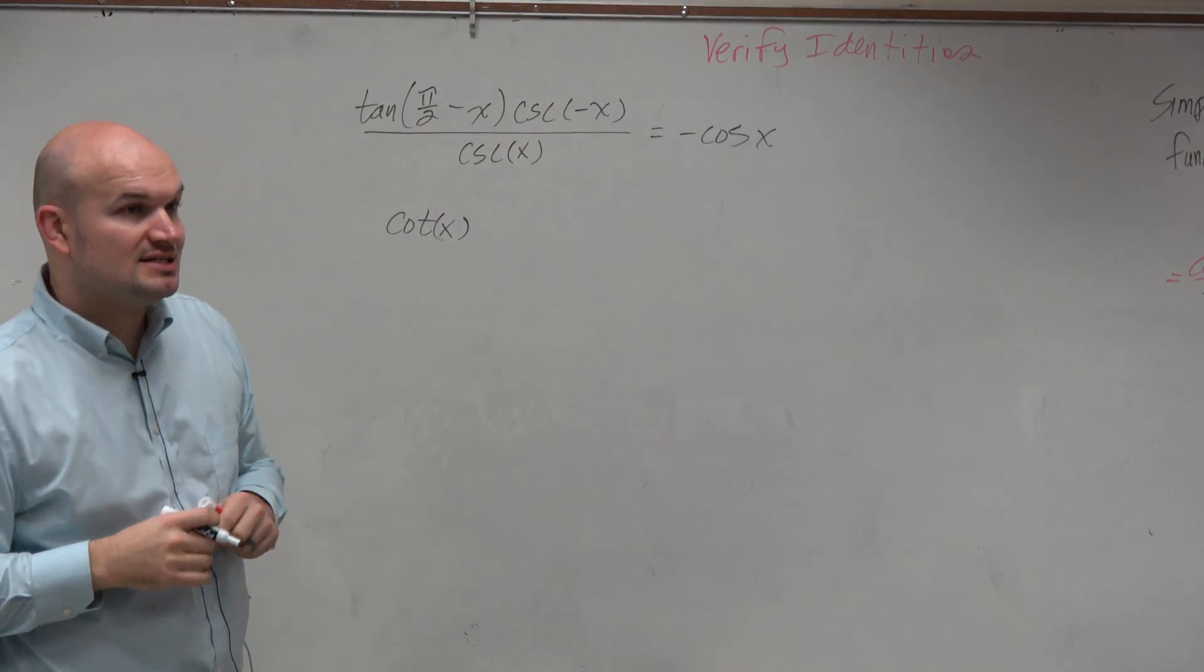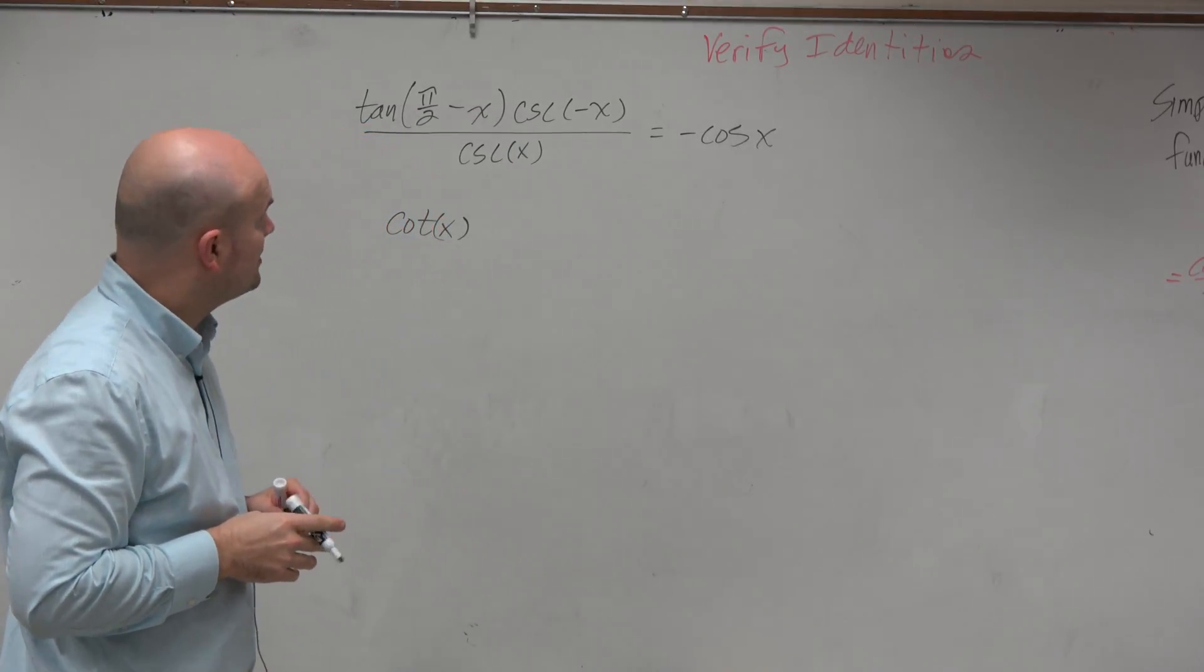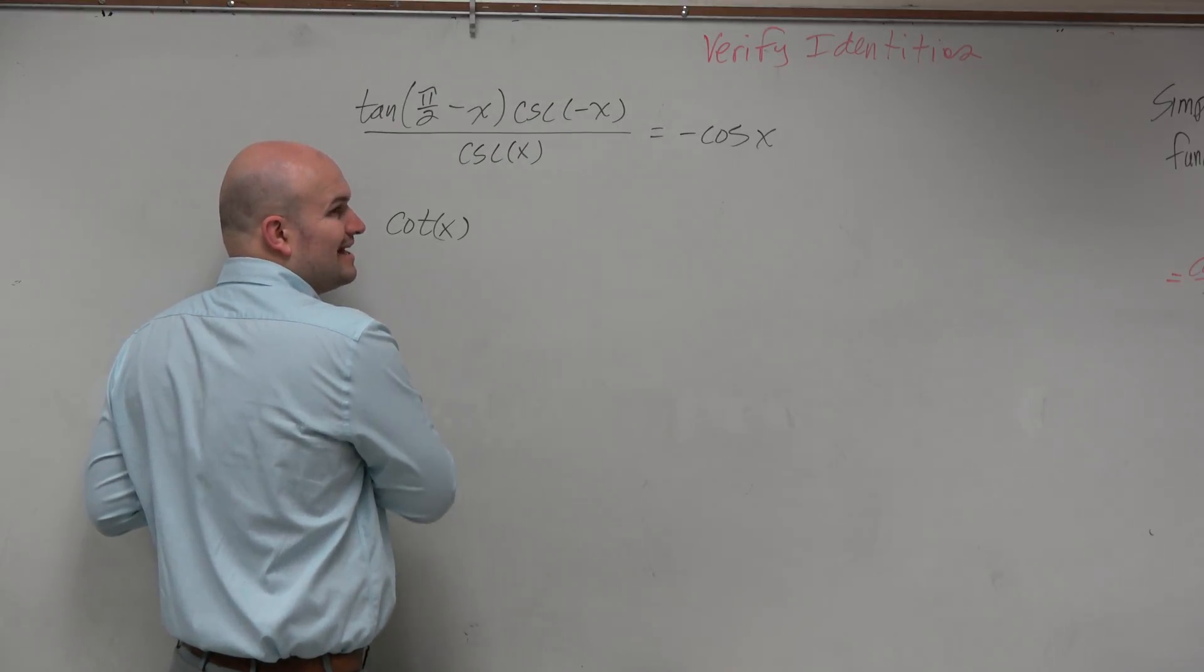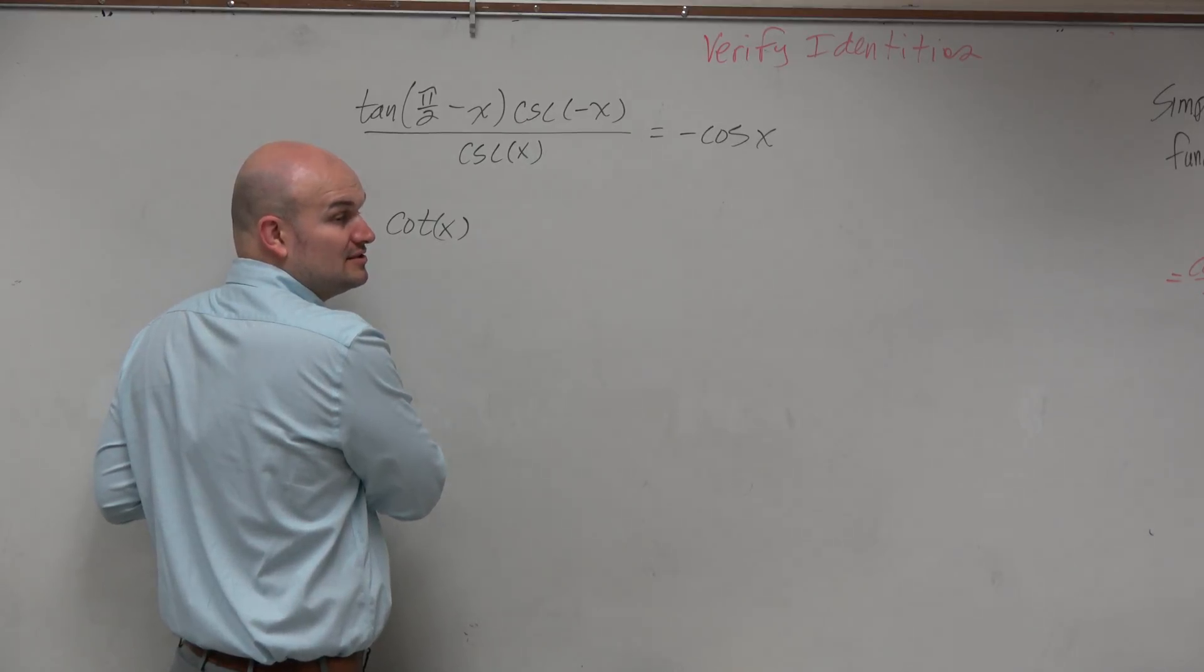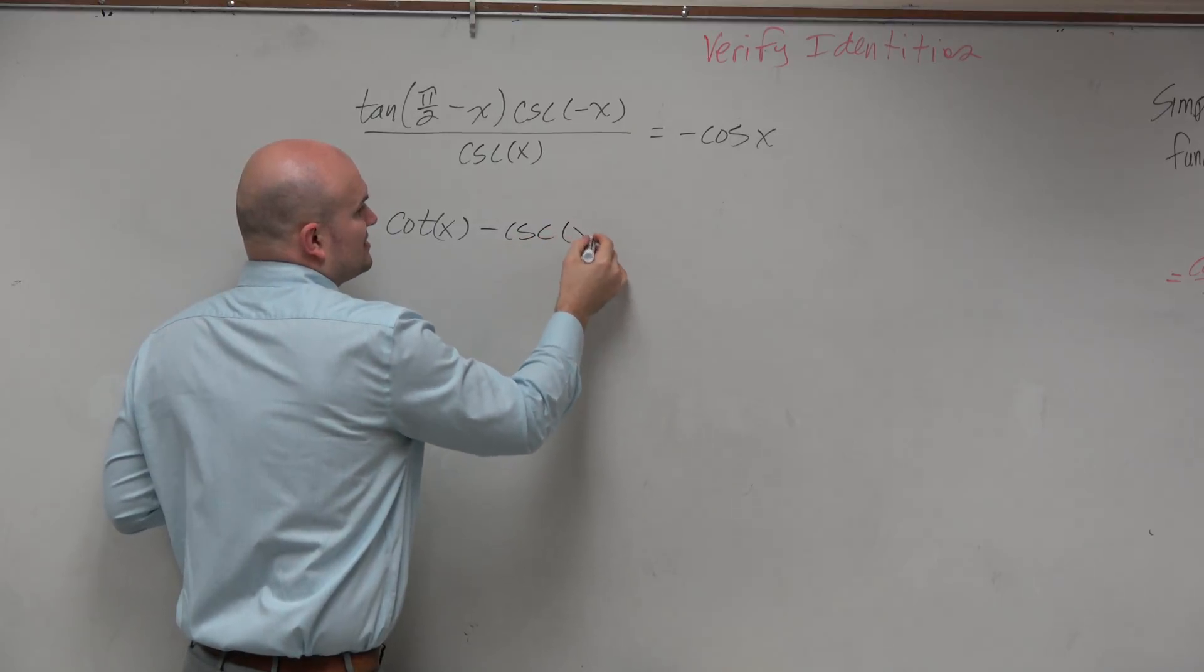Cosecant of negative x, is that going to be, anybody know? Is cosecant even or odd? It is odd. The only two functions that are even are cosine and secant. So this turns into negative cosecant of x.